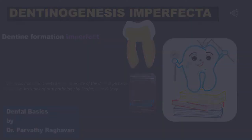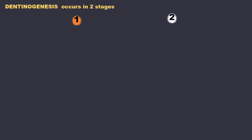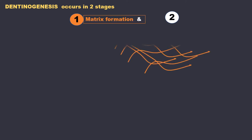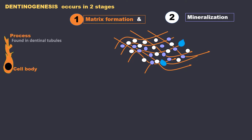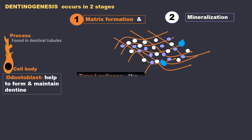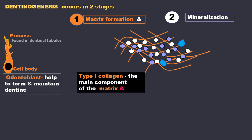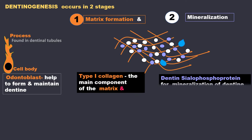Dentine formation occurs in two stages. First there is formation of matrix and this is followed by mineralization. This is an odontoblast. It helps to form and maintain dentine. For this they secrete type 1 collagen, the main component of the matrix, and also dentine sialoprotein for mineralization of dentine.